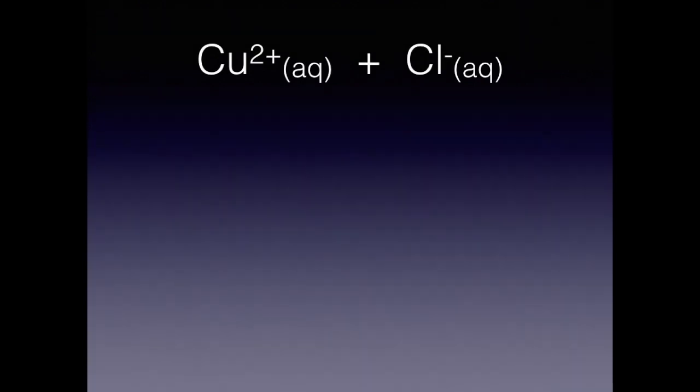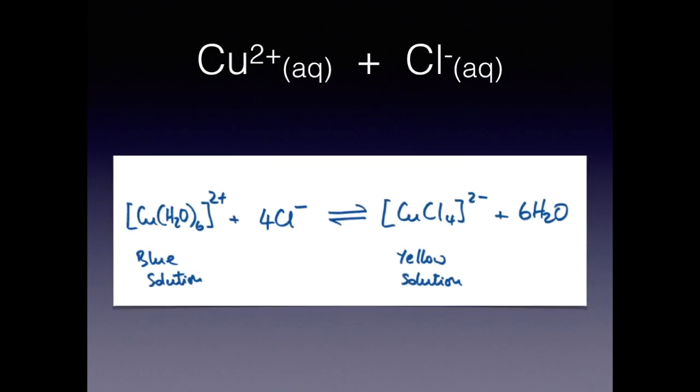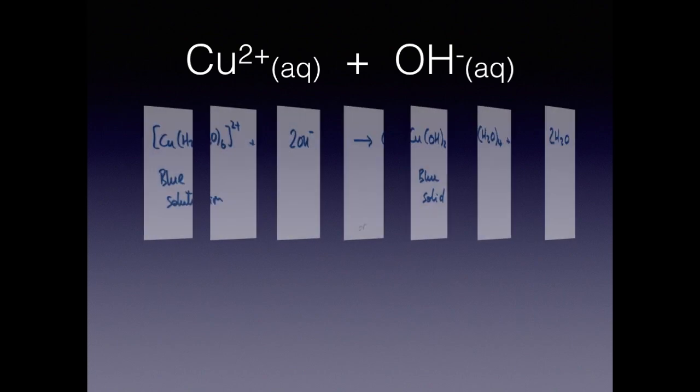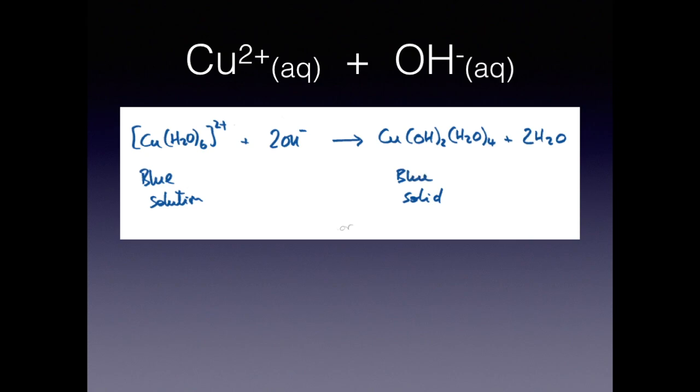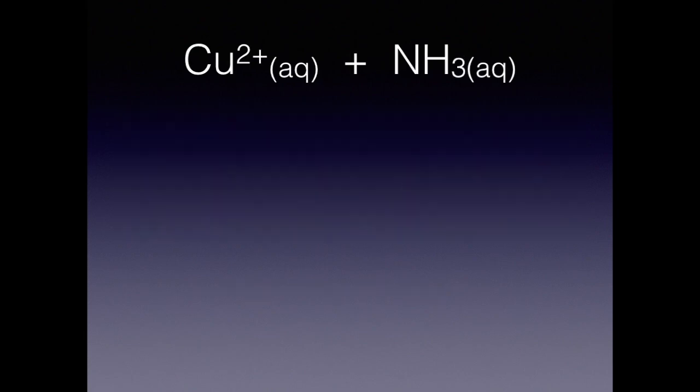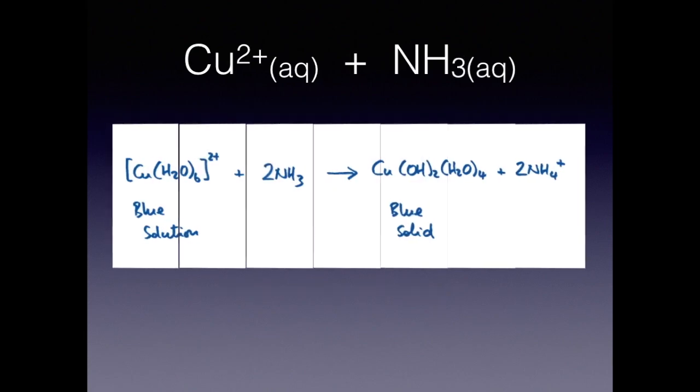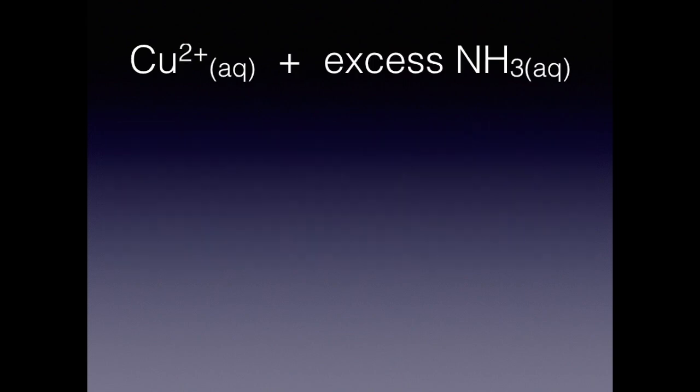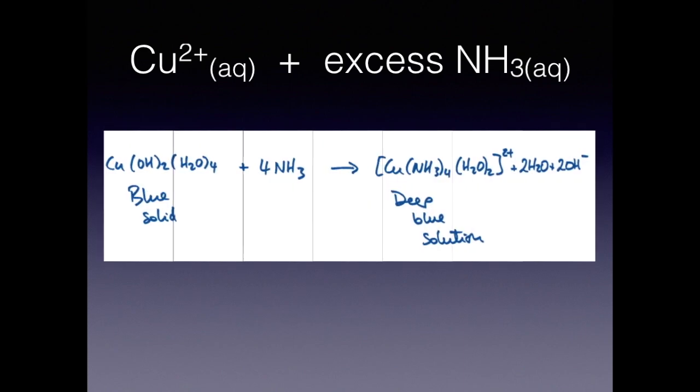So aqueous copper 2 plus with chloride ions, got that equation there. Aqueous copper 2 plus and hydroxide ions. You can either go for the full version there or the shorthand version there. Aqueous copper 2 plus and ammonia. That's it there. Aqueous copper 2 plus and excess ammonia now. That one there.